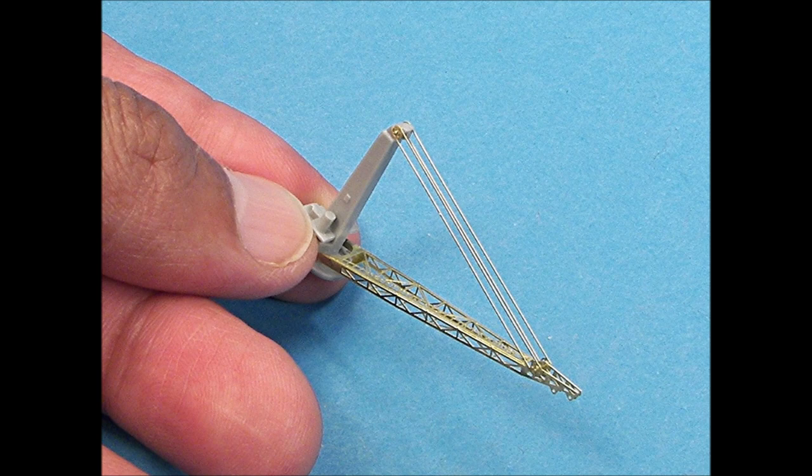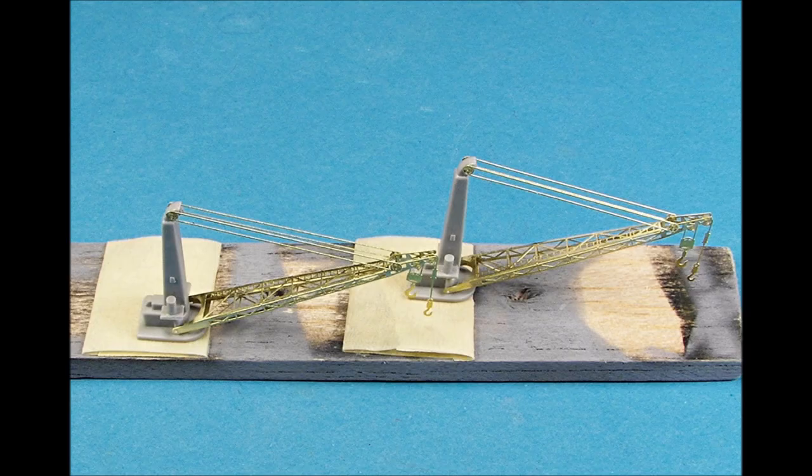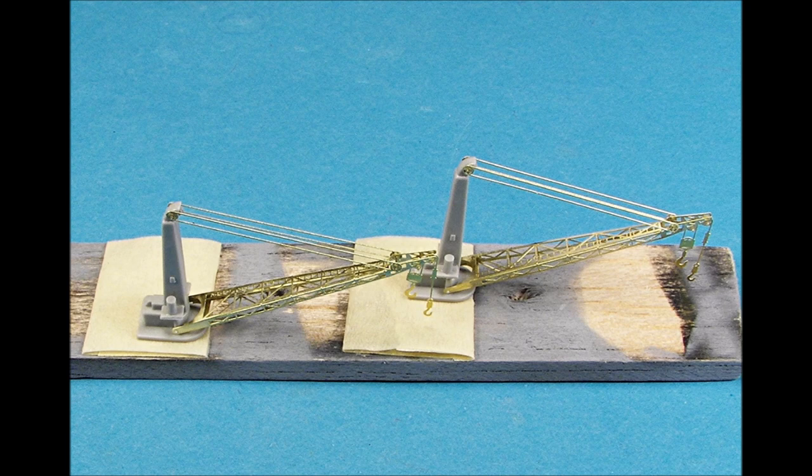Small drops of superglue were applied to the brass wire, and then the wire was carefully trimmed with a pair of sharp wire snippers. The last step in building the cranes was to add the hooks. These assemblies are now ready for priming and painting.